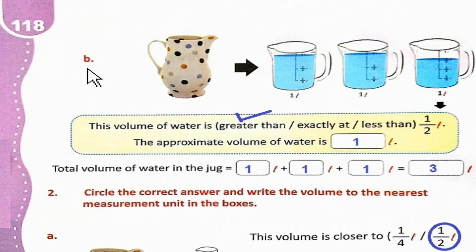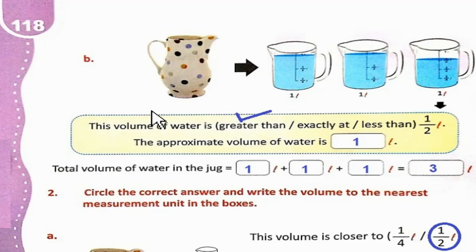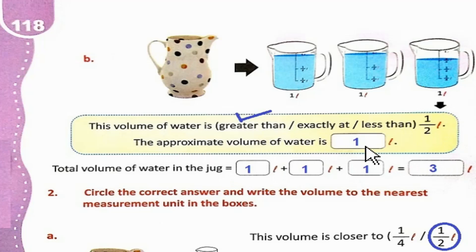Page 118, Part B — the volume of water is greater than, exactly at, or less than 1/2 liter? ये تقریباً 3/4 liter کے برابر ہے تو ہم greater than کو tick کریں گے. The volume of water is greater than 1/2 liter. The approximate volume of water is 1 liter, کیونکہ nearest liter 1 liter ہے. The total volume of water in the jug is 1 liter + 1 liter + 1 liter = 3 liters.